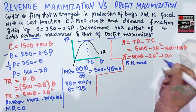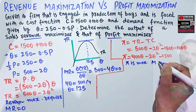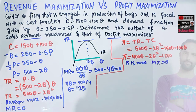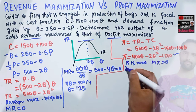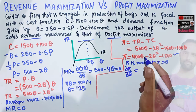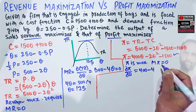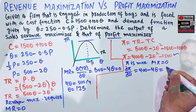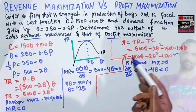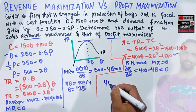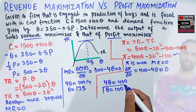Profit is maximized when marginal profit equals zero. Taking the derivative of the profit function with respect to q: dπ/dq = 400 − 4q. Setting this equal to zero gives 4q = 400, so q = 100. Profit is maximized at an output level of 100.